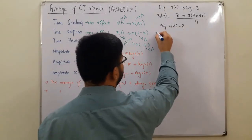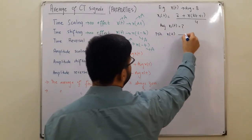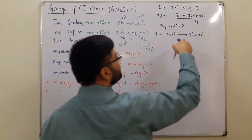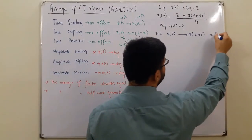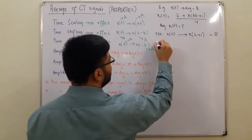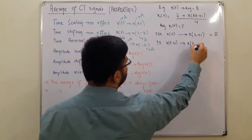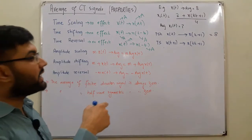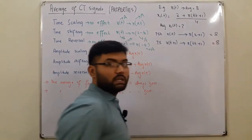Now let's solve the example step by step. First, apply time shifting: x(t) is time-shifted to x(t + 1) — the average still remains 8, since time shifting has no effect. Then apply time scaling: x(t + 1) is scaled to x(2t + 1) — time scaling also has no effect, so the average is still 8.